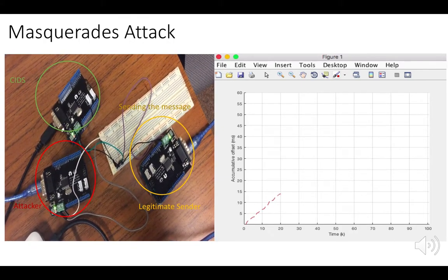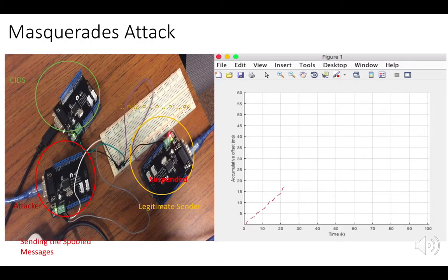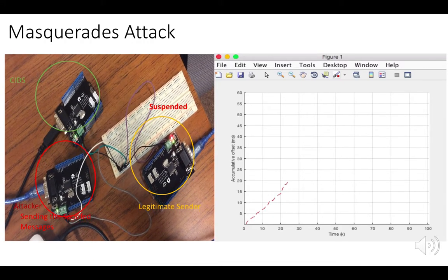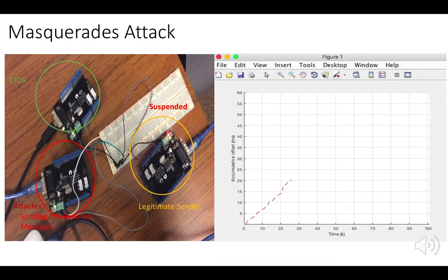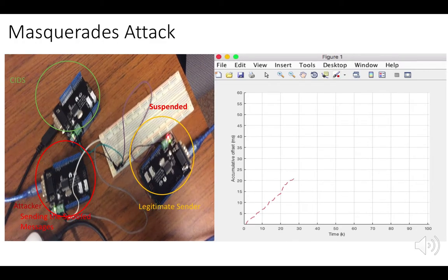At this point, the Legitimate Sender suspended message transmission, and the attacker started sending spoofed messages at K equals 20.